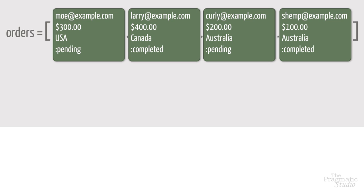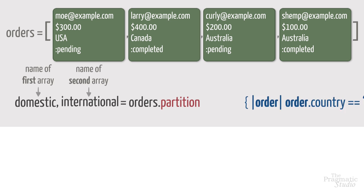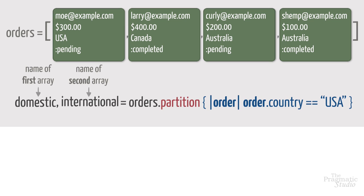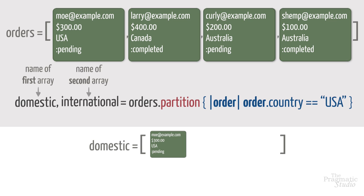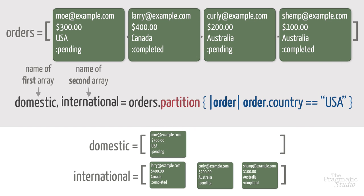Here's another example of the partition method in action. Let's say we also track the country in which the order was placed, so the order class also has a country attribute. We're interested in dividing the domestic and international orders into two separate arrays. The orders for which the block returns true — in this case the country is USA — end up in the first array, domestic. The orders for which the block returns false, any country not USA, end up in the second array, international.